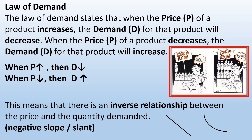The law of demand states that when the price of a product increases, demand will decrease. When the price of a product decreases, the demand for the product will increase. The more cheaper things become, the more you will demand or be willing to buy. But the more expensive a product becomes, the less you will be willing to pay — so your demand will decrease. This means there is an inverse relationship between price and quantity demanded. It's a negative slope, meaning the curve goes downward.